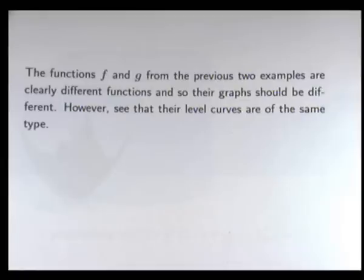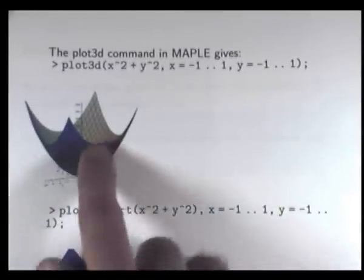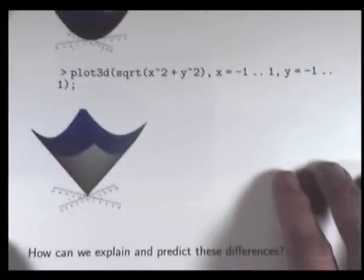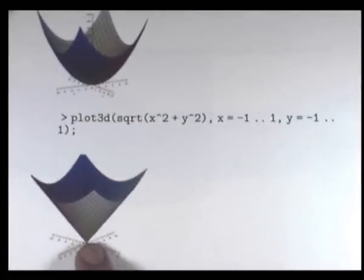Note that F and G from the previous two examples are different functions, but they have the same level curves. If they're different functions, we'd expect them to have different graphs. In fact, going to Maple and using the plot3D command, here's the plot of the first function and here's the plot of the second. They look similar, but they're different — this one's rounded at the bottom, and this one's pointy, like a cone.